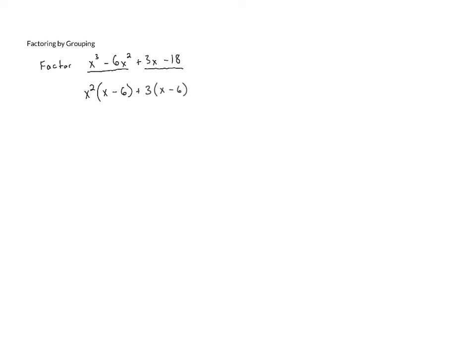Now, we notice here that something interesting happened. Both of the groups have a common factor of x - 6. In fact, we can call that the greatest common factor among the two groups. And so we're going to pull that out front, just like we usually do with a greatest common factor.